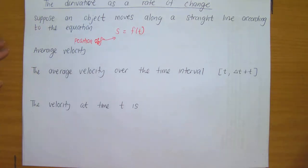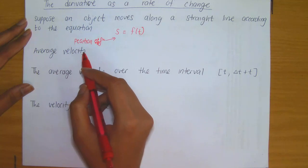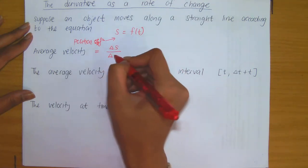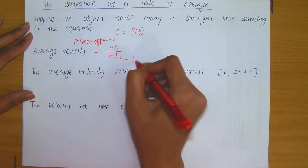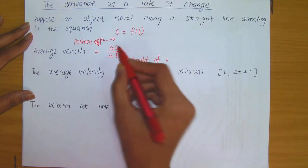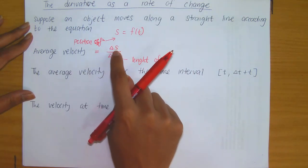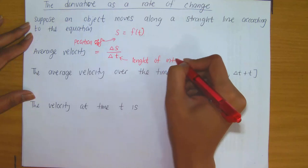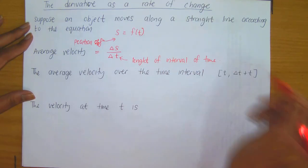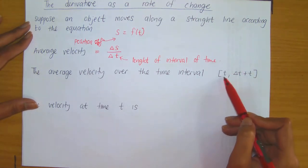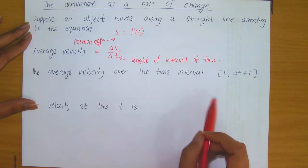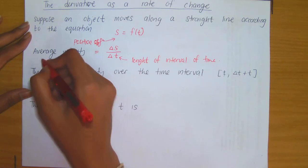Recall from what you would have learned in school that velocity can be computed by taking the displacement over time. So average velocity in particular will be equal to the change in S over the change in T, where the change in T denotes the length of the interval of time over which we have obtained the change in S, which is displacement. If I work with the interval given by lower bound T and upper bound T plus delta T, where delta T refers to the change in time, then the average velocity over that interval is...